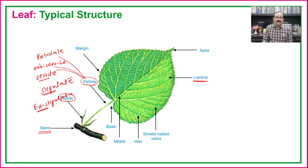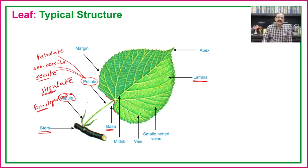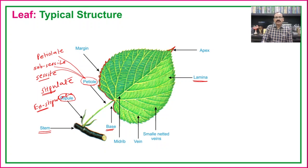The part where the lamina is attached to the petiole is known as the leaf base. In different plants, leaf bases are also different, which is one of the taxonomic characters. From the leaf base there is a margin, and even this margin will be different in different plants. The apex of the leaf again has many different types in dicotyledons as well as monocotyledons.